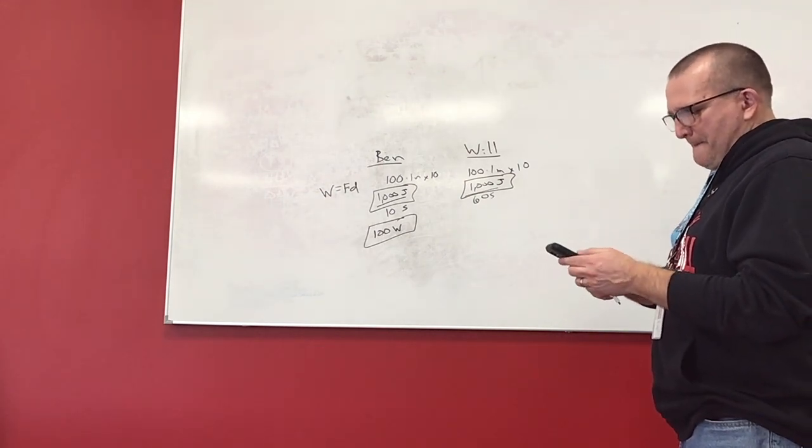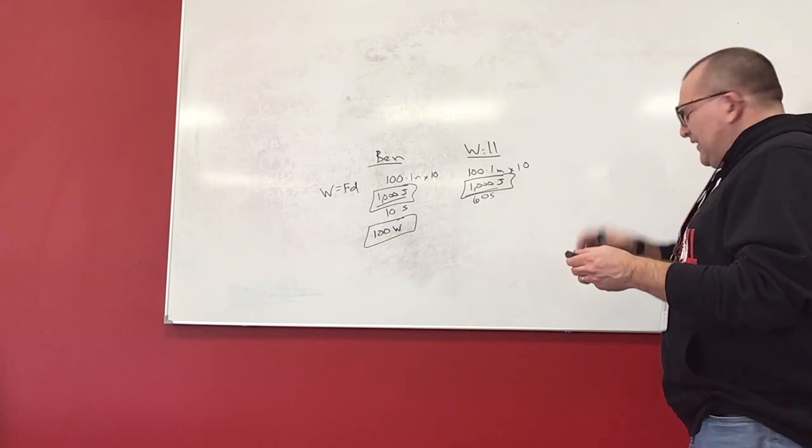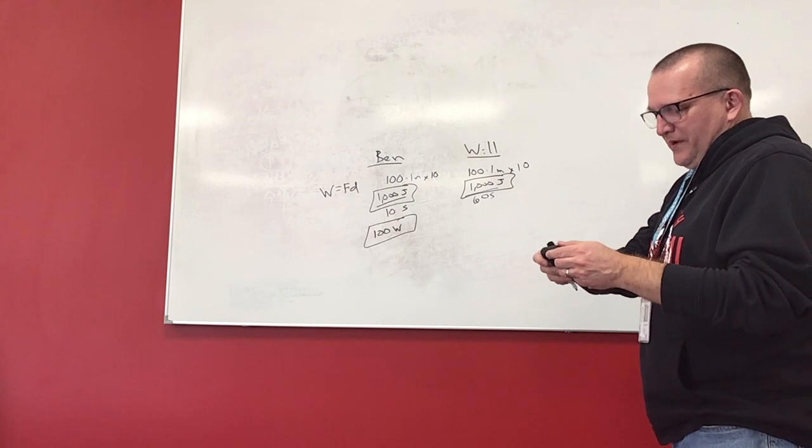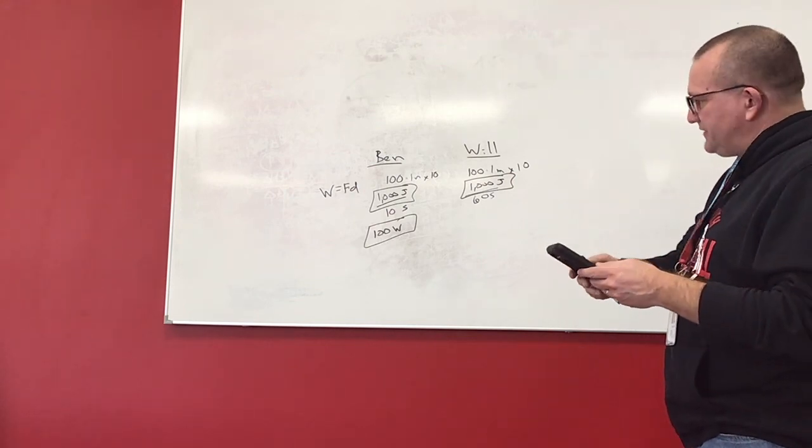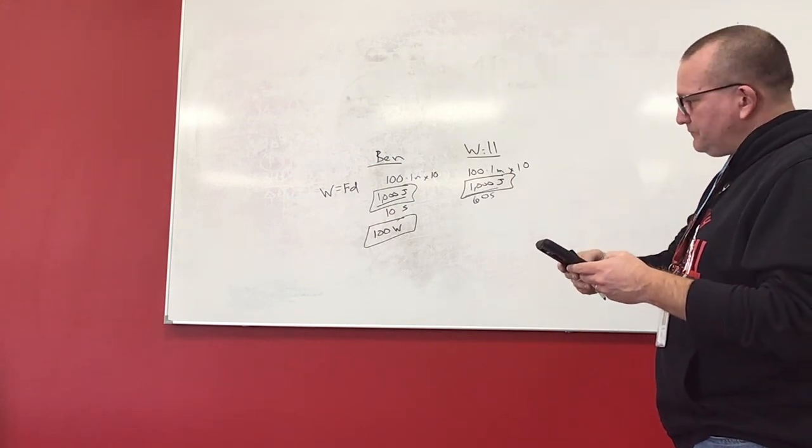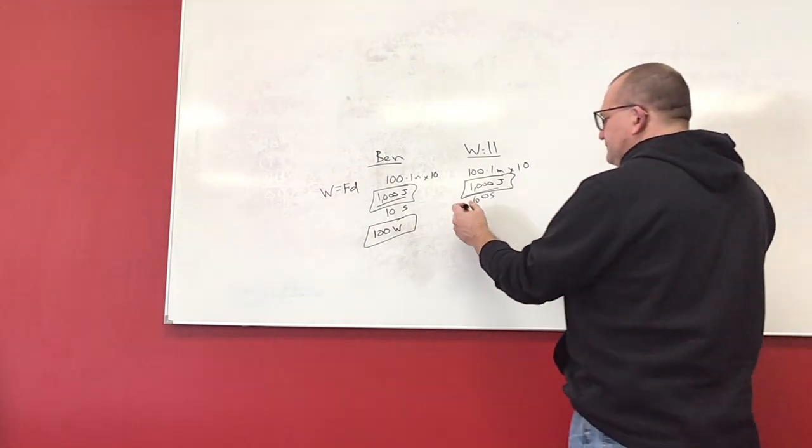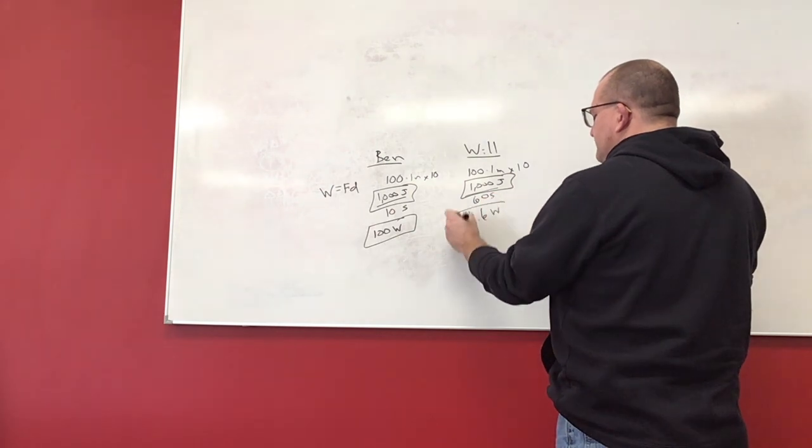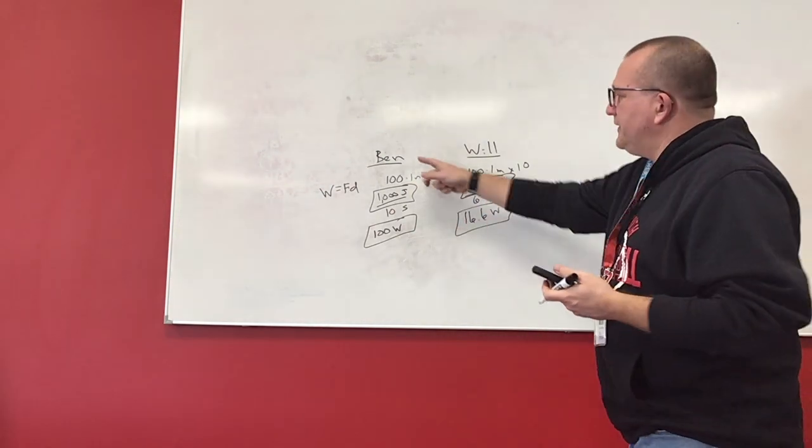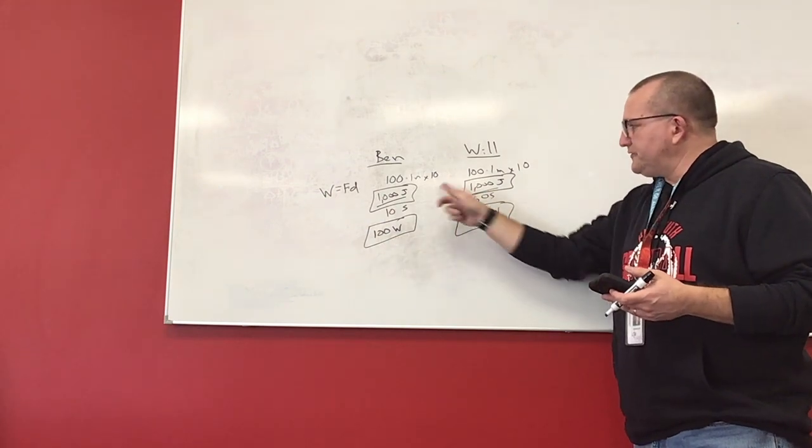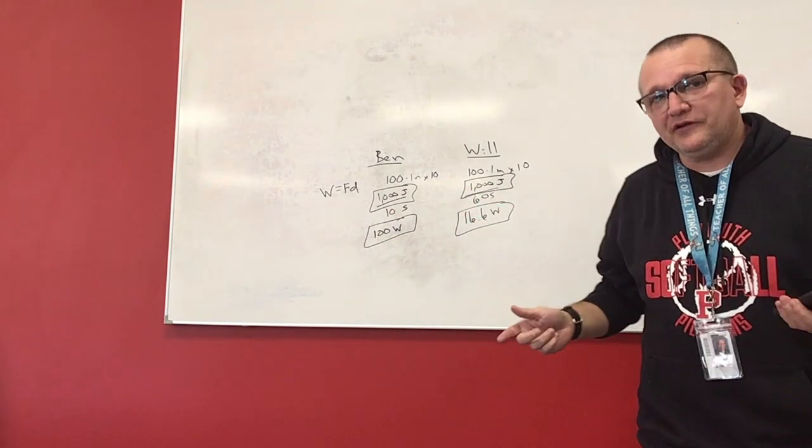Will, on the other hand, is doing it in one minute. One minute is 60 seconds, so let's take your thousand joules and divide it by 60 seconds. I'm going to calculate that out. So I take one thousand divided by 60 and I get 16.6 watts of power. So Ben is more powerful than Will even though they do the same amount of work, because Ben did the work faster.